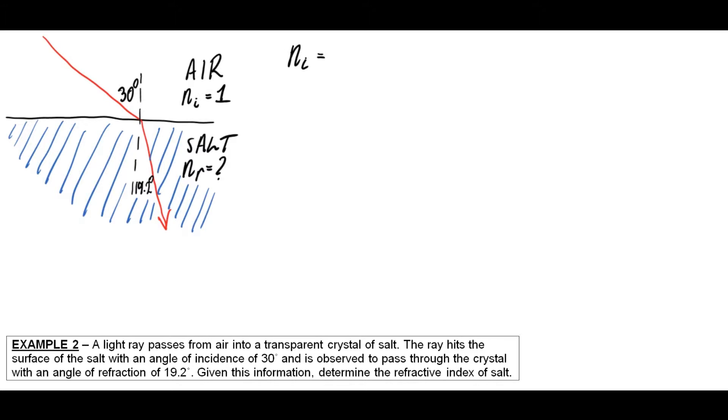So I label my diagram. Having done that, up the top here I write down what I know, again like the previous example, using the correct symbols. And I write down what I'm trying to find. So in this case here I'm trying to find the refractive index of salt, and because that's what the light ray is passing into, I'm going to use the subscript r for refraction for that one. So I'm trying to find nr.